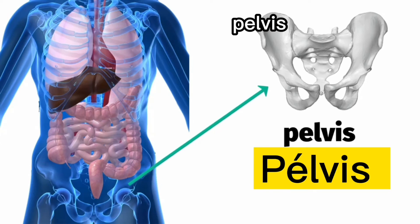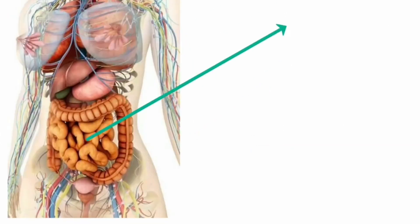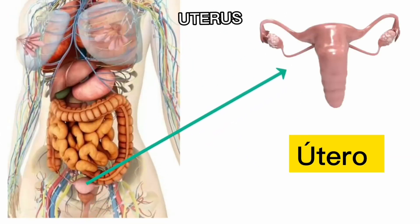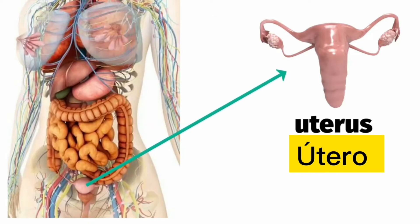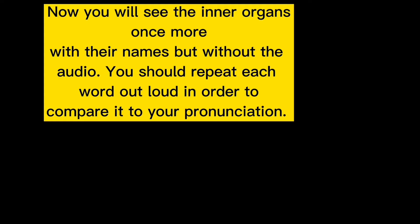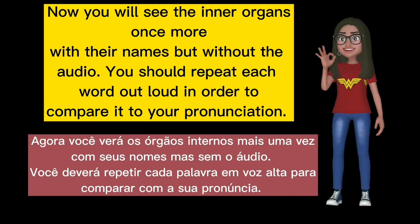Pelvis. Uterus. Now you will see the inner organs once more, with their names but without the audio.